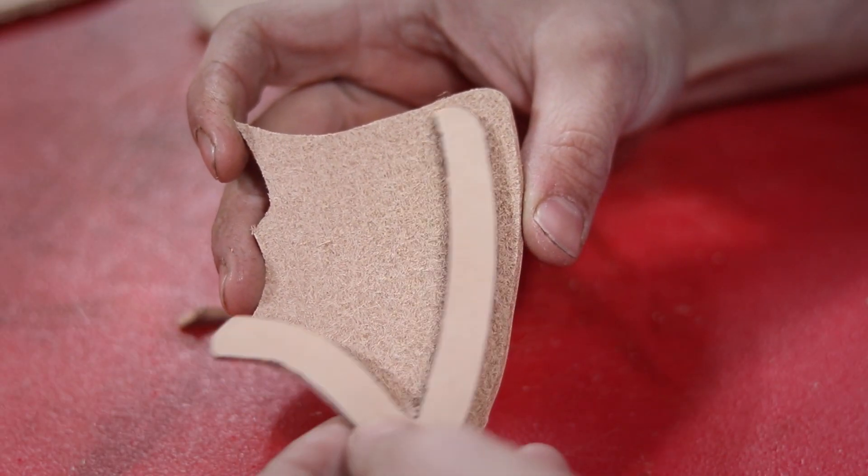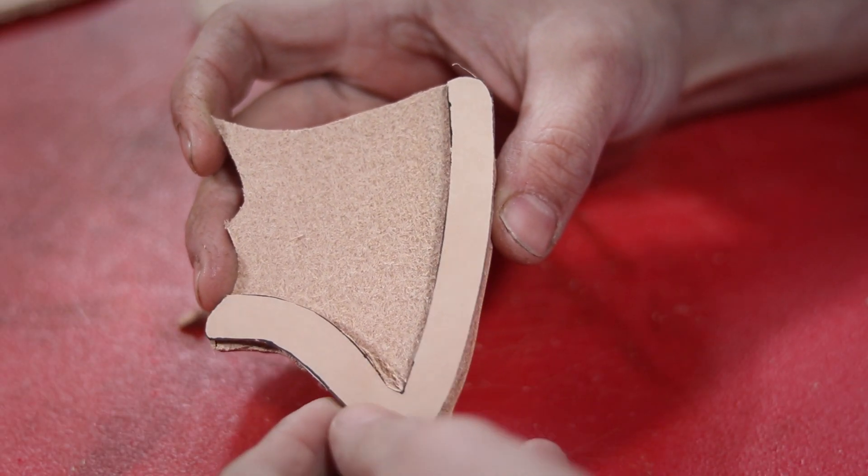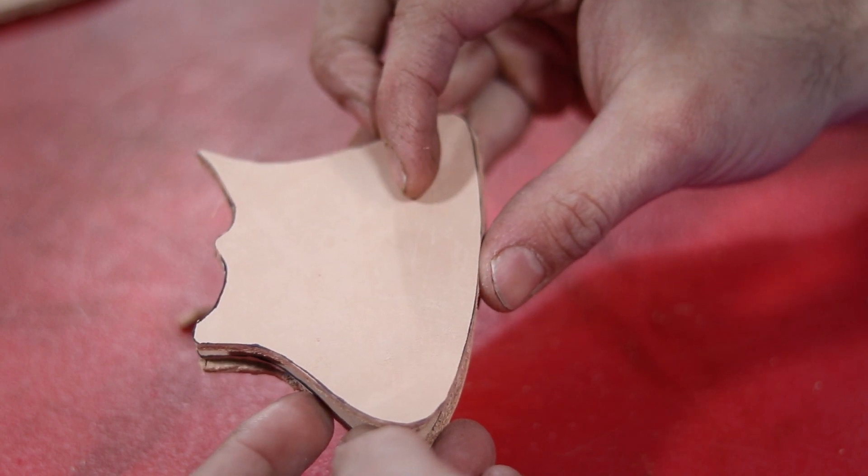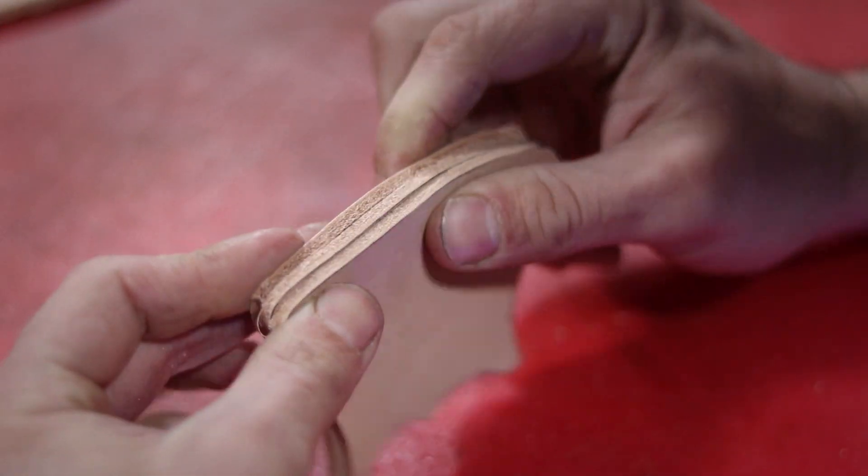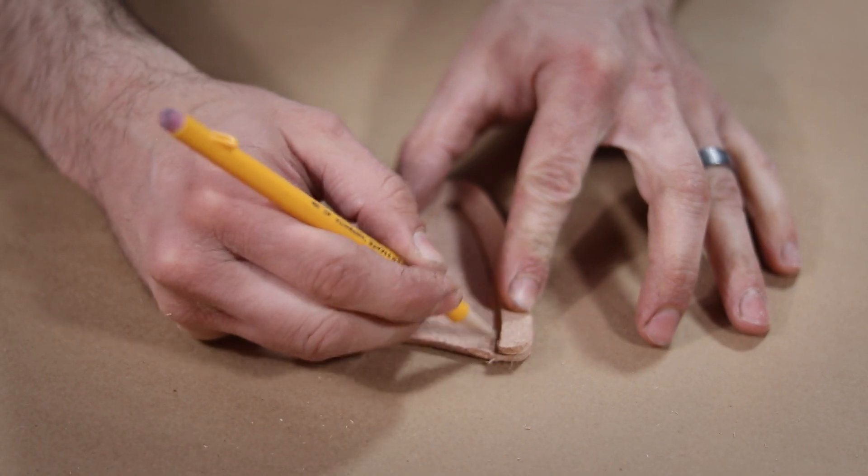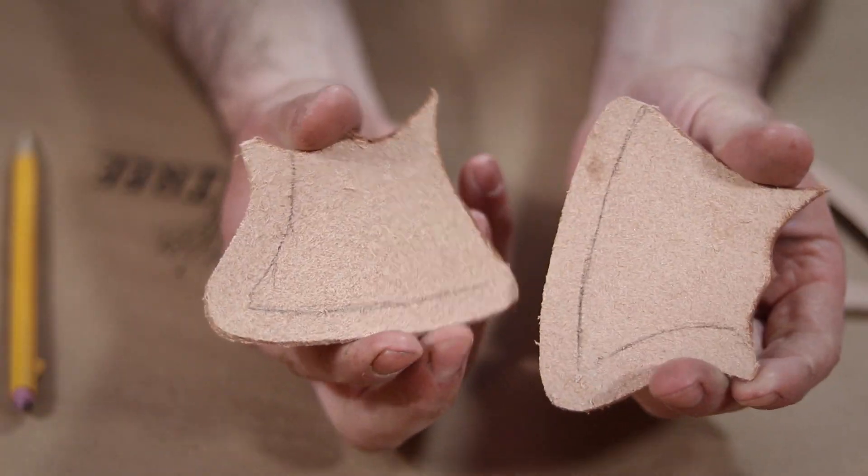So the general idea is to place the welt onto the leather like so, sandwiching it between the two plates to leave a gap between them. Now we're going to want to glue this before we sew it, so I lay the welt down onto the leather and trace it out so I know where the glue needs to be applied.